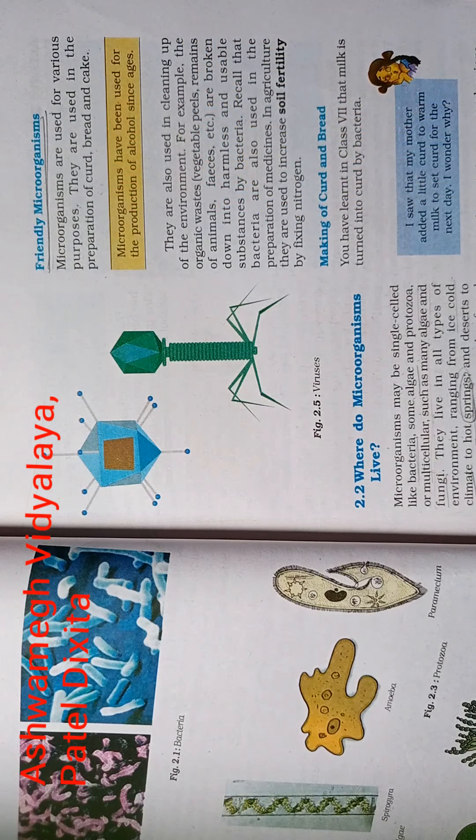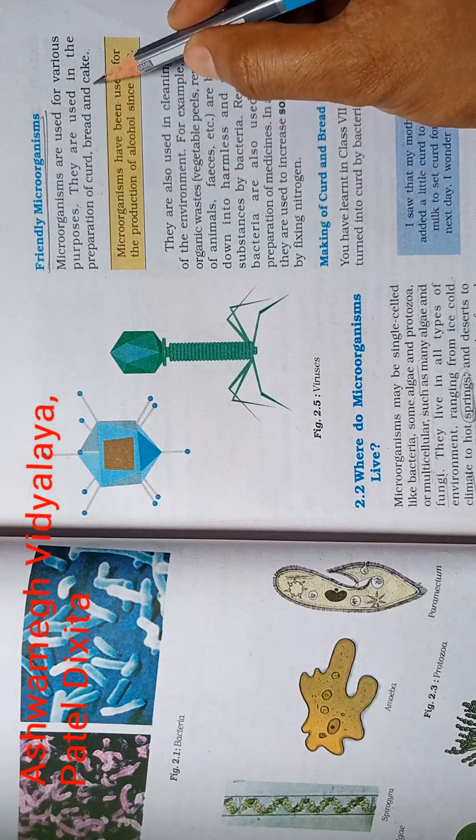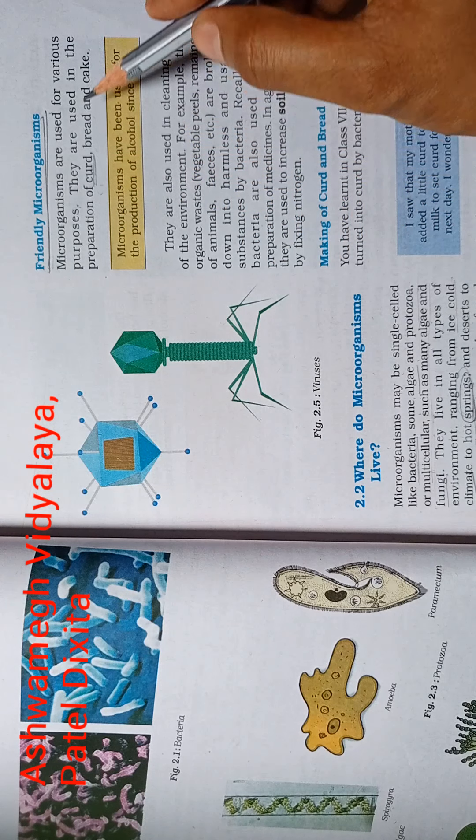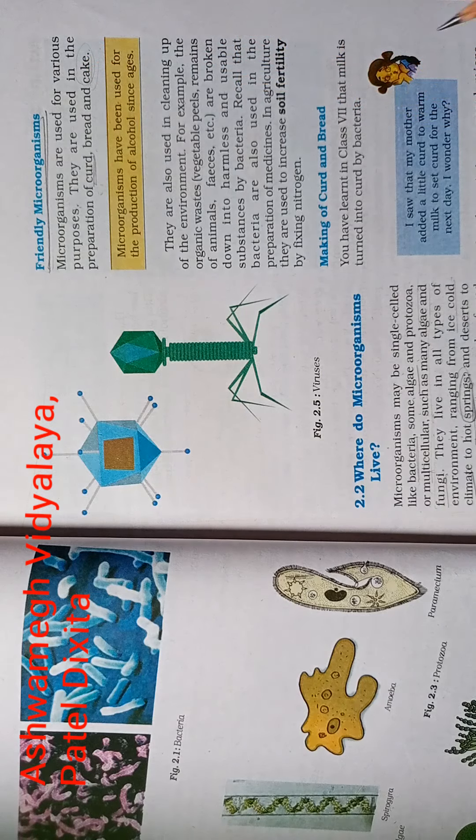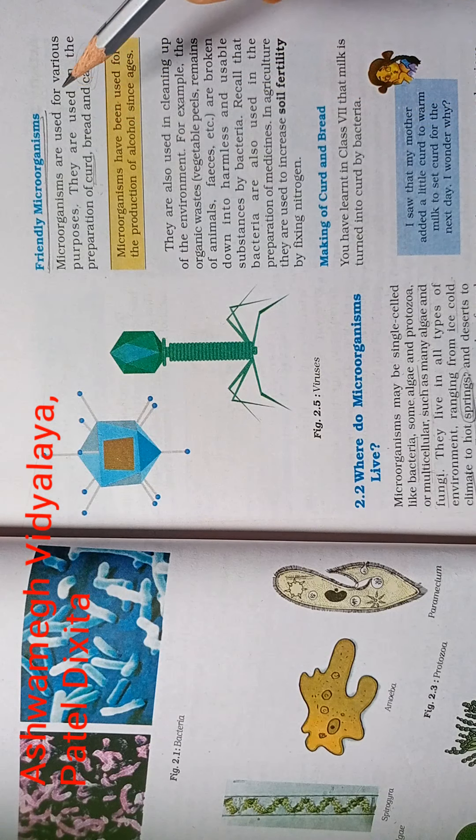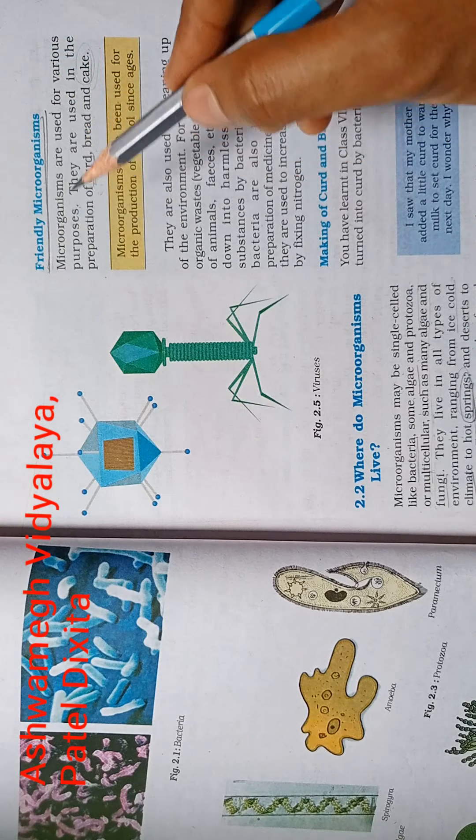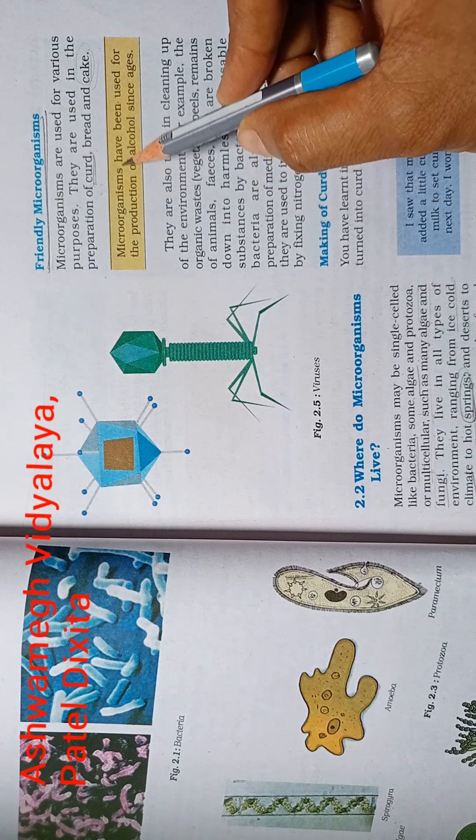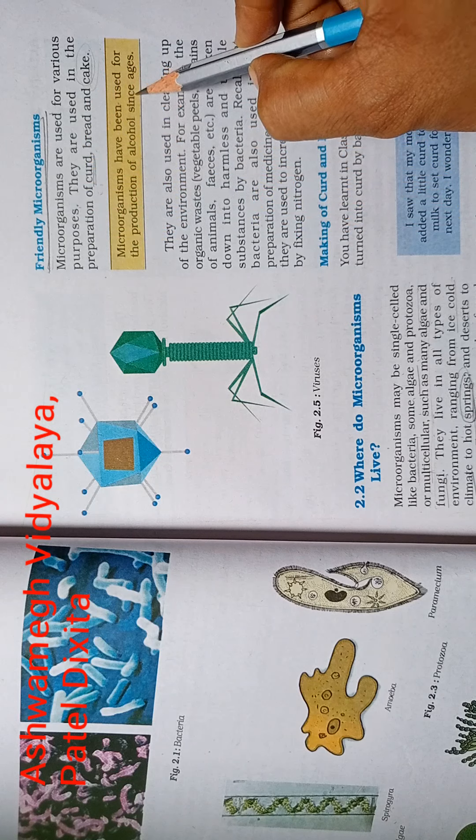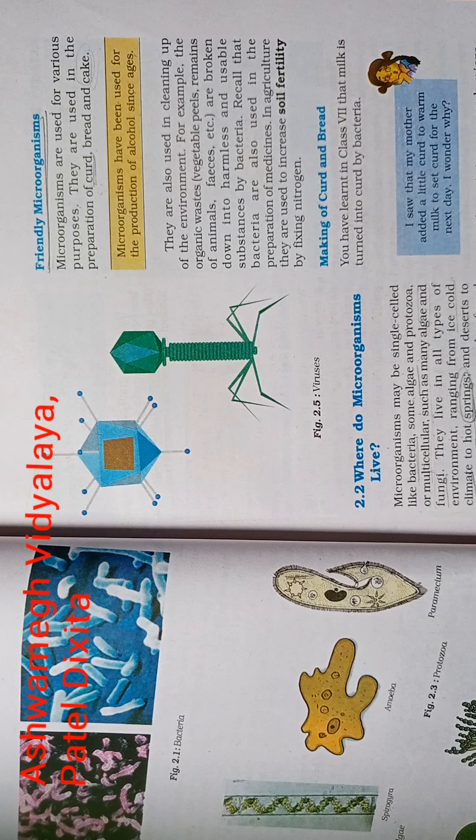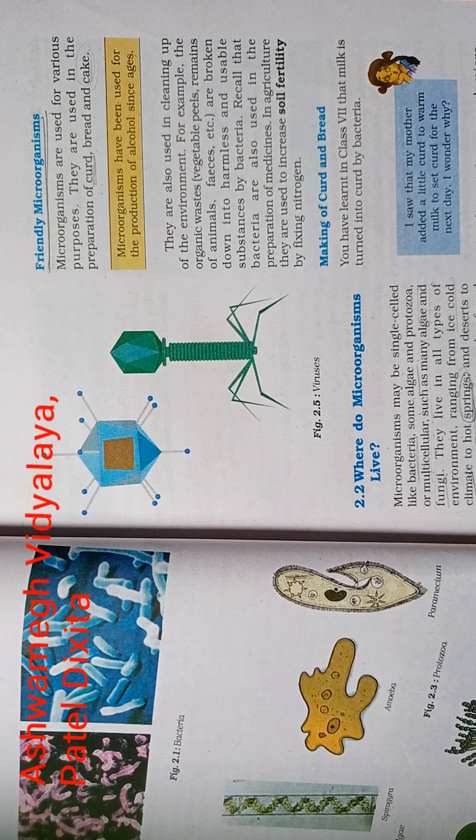They are used in the preparation of curd, bread, and cake. We are making bread, curd. Curd means dahi. Cake is our favorite. Cake, curd, and bread. How do we use microorganisms? Microorganisms have been used for the production of alcohol since ages.